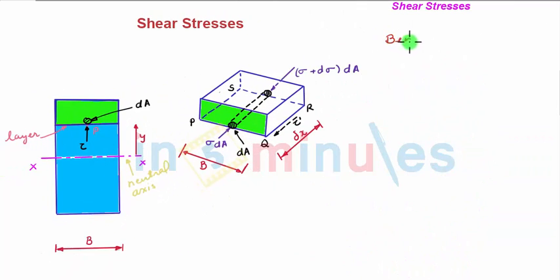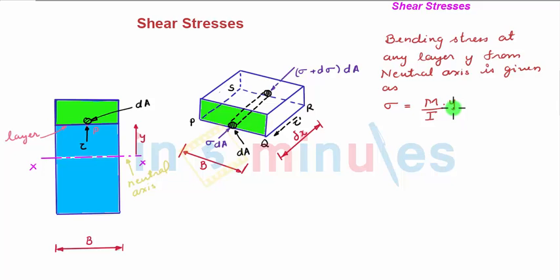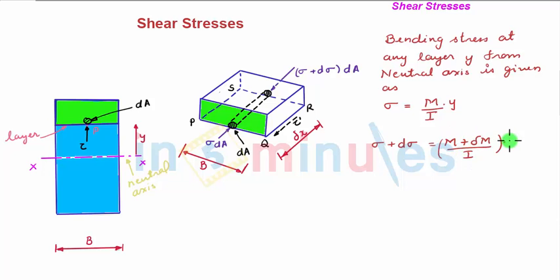We know the longitudinal (bending) stress at any layer y from the neutral axis is given as sigma = (M/I) times y, where M is the bending moment, I is the moment of inertia of the whole cross-section, and y is the distance of that layer from the neutral axis. So we can write sigma + d sigma = (M + delta M) / I times y, and therefore d sigma = (delta M / I) times y.